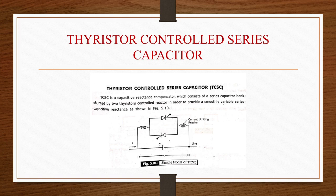Combined series-series can be a combination of separate series controllers which are controlled in a coordinated manner in a multi-line transmission system, or it could be a unified controller in which series controllers provide independent series reactive compensation for each line but also transfer real power among the lines via a power link. Combined series-shunt is a combination of separate series and shunt controllers controlled in a coordinated manner, or a unified power flow controller with series and shunt elements.